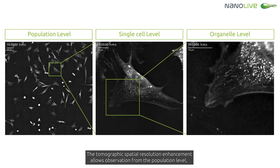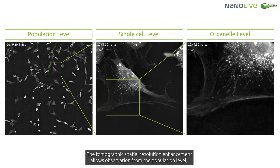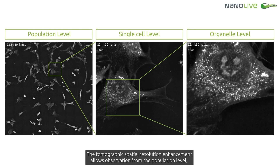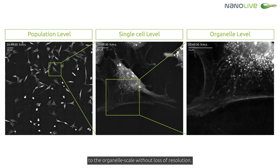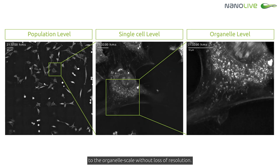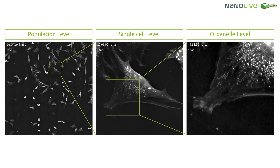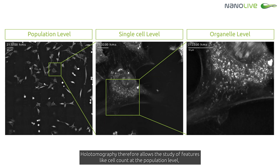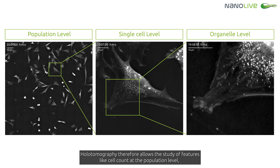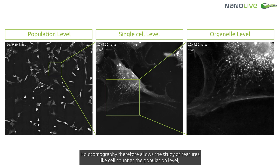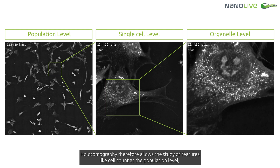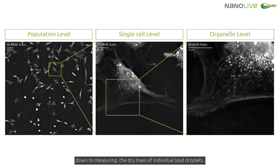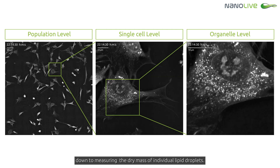The tomographic spatial resolution enhancement allows observation from the population level to the organelle scale without loss of resolution. Holotomography therefore allows the study of features like cell count at the population level down to measuring the dry mass of individual lipid droplets.